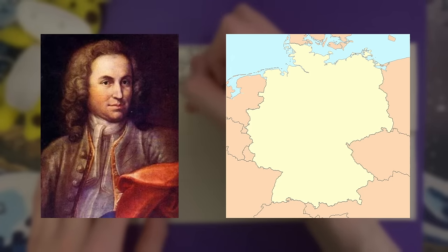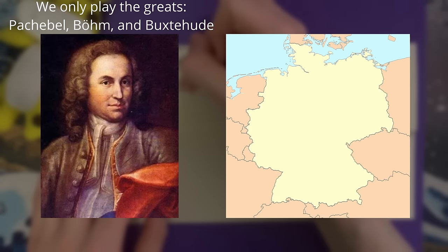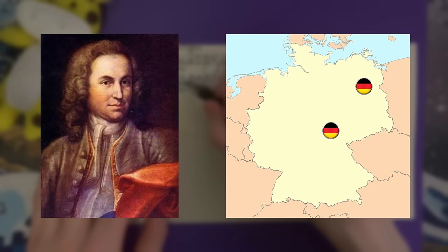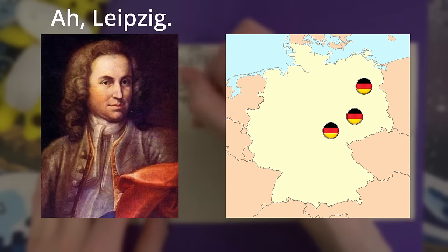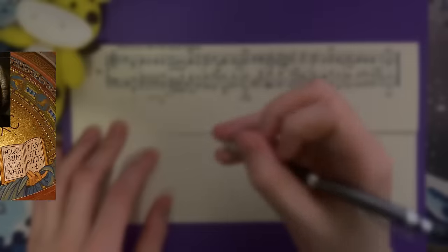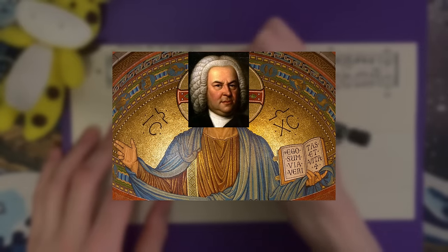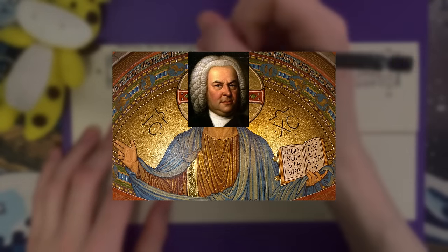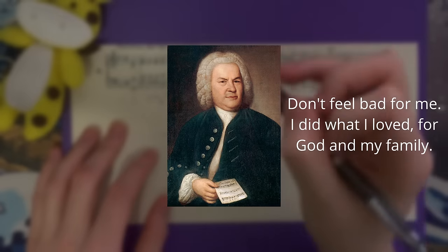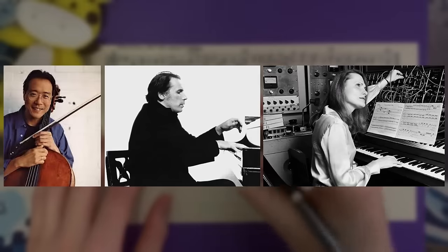Bach was also known as a music director later in life, holding positions in Weimar, Cöthen, and his longest post, Leipzig, where he remained for the last 27 years of his life. While it's easy to worship Bach for his contributions, he did not live glamorously. Bach grew up in poverty, and although he found musical success later in life, he never achieved the level of wealth most might assume he had given how commonplace his music is today.